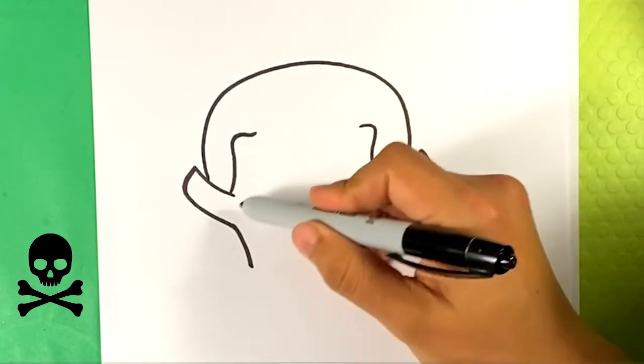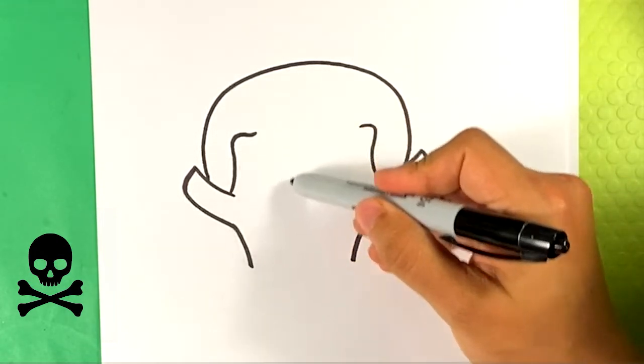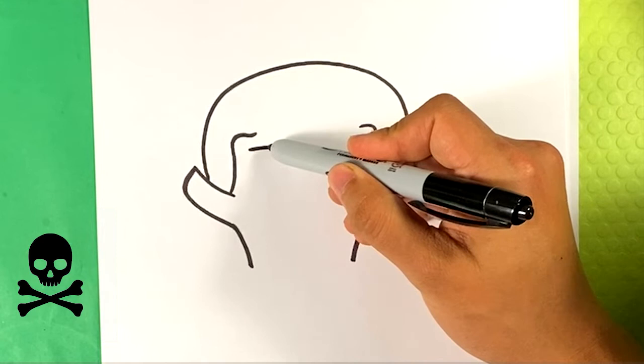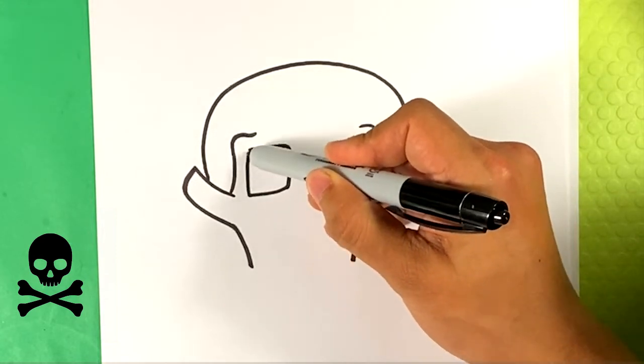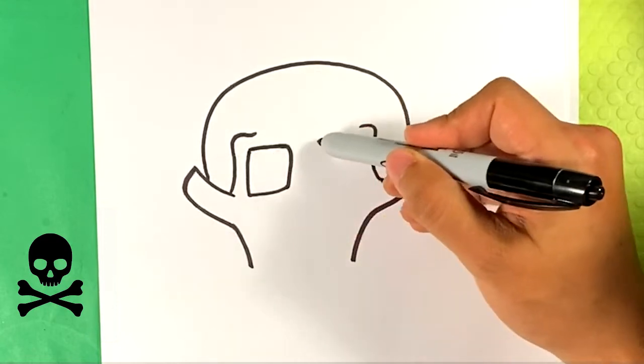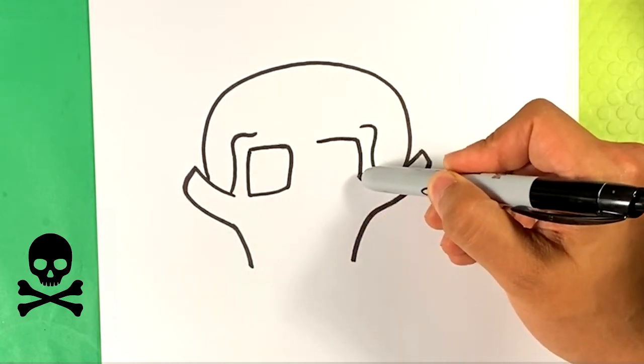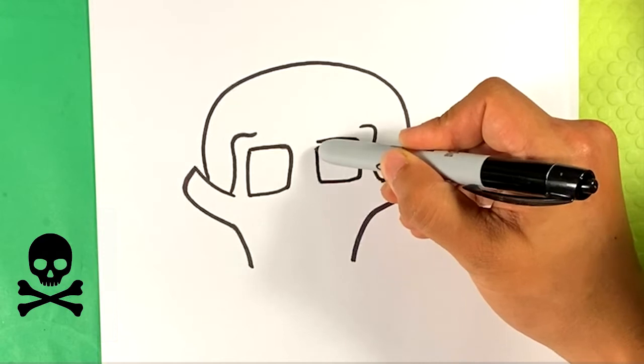I'm gonna go over here now and I'm gonna draw the eye sockets now. So I'm gonna make them kind of square. So pull line there, down, pull back, up. Over here, down, curve in, up.